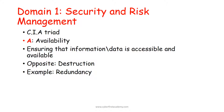The opposite of availability is destruction. An example of availability is redundancy — having backup servers so that if one fails, another picks up — or having an ample amount of storage. Those are examples of availability.